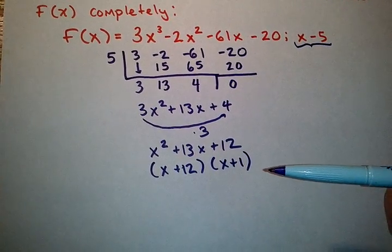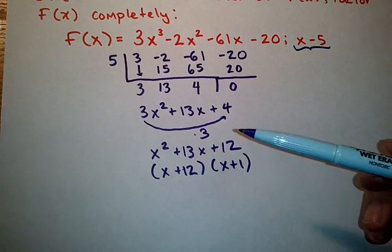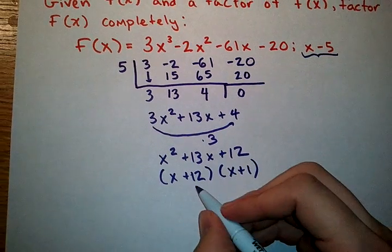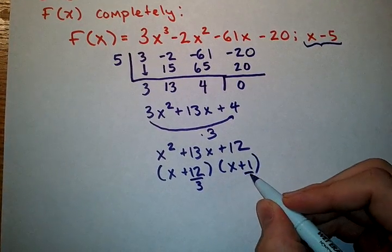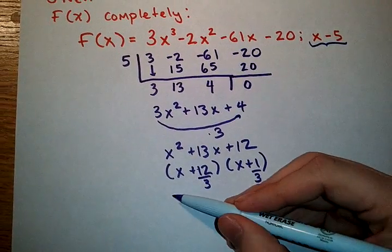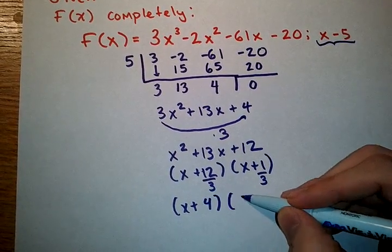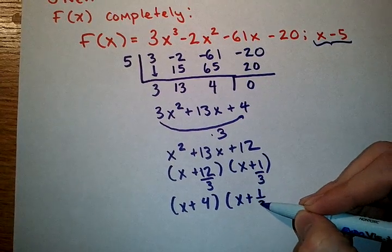Now, the next step of this bottoms-up method for factoring. I multiplied by 3 originally. I have to undo that. So I'm going to divide both of the numbers by 3. We reduce, if possible, 12 divided by 3 we know is 4, and 1 third does not reduce.